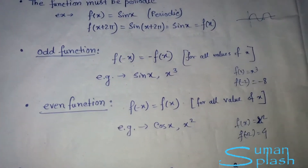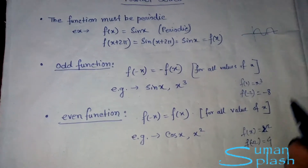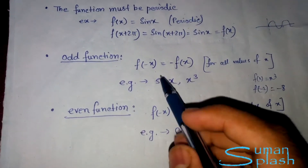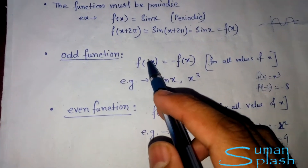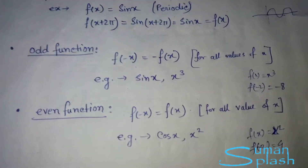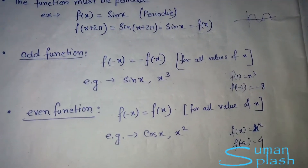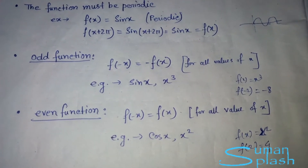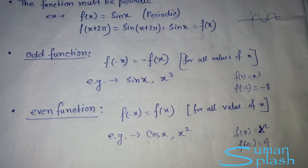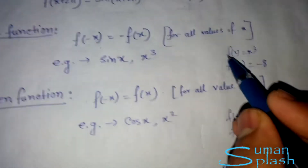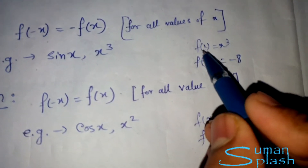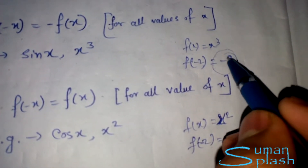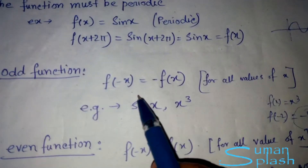We need to know some basics to solve Fourier series problems. First, there is the odd function. A function is odd if f(−x) = −f(x) for all values of x. Examples of odd functions are sin(x) and x³. For instance, if f(x) = x³, then f(−2) = −8, which equals −f(2), confirming it is odd.